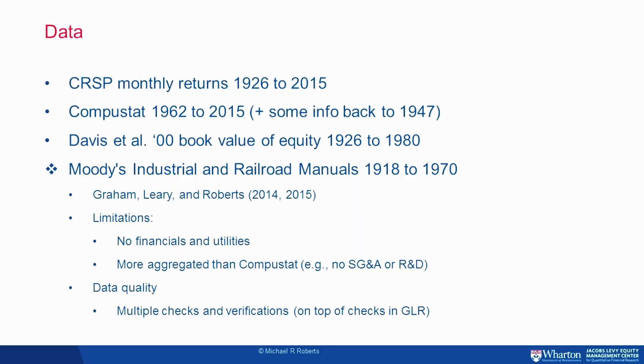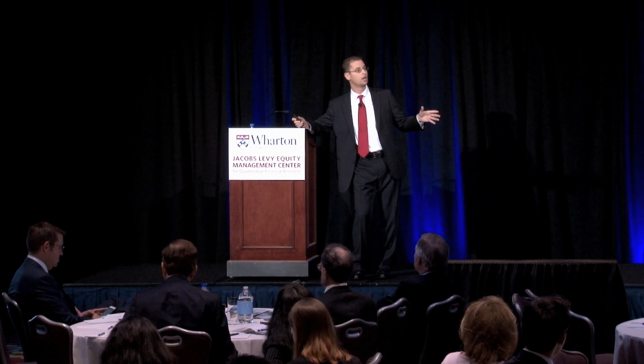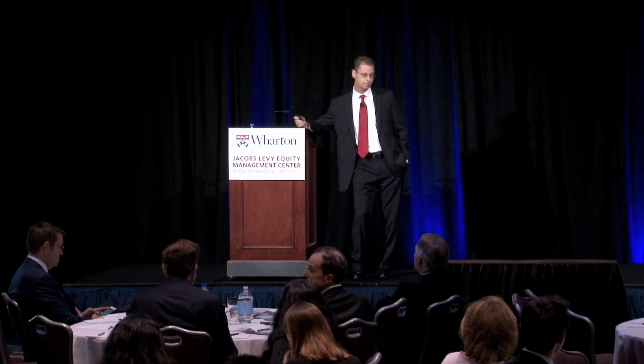There are some limitations. We don't have information on financial firms or utilities, partly because the original impetus for the data collection was different from an asset pricing approach, and also because we ran out of money — financials and utilities are in different sets of manuals. The data is also slightly more aggregated than CompuStat; we don't have R&D expenditures or SG&A. In terms of data quality, we've done a number of checks in this paper and in earlier research.